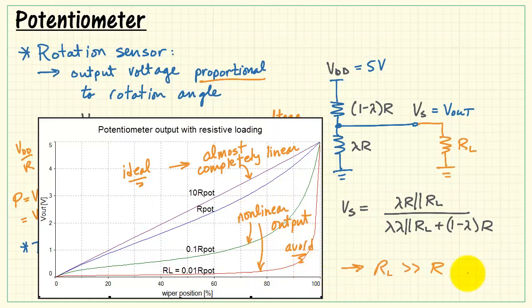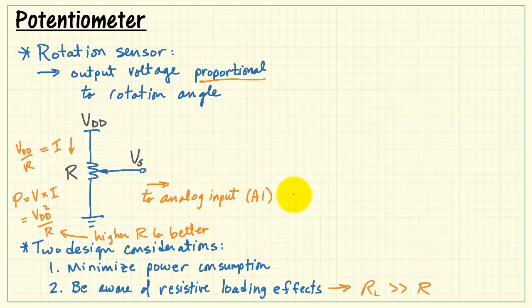We need to avoid the cases where the load resistance is too low. Generally, we want the load resistance to be much higher than the value of the potentiometer resistance.